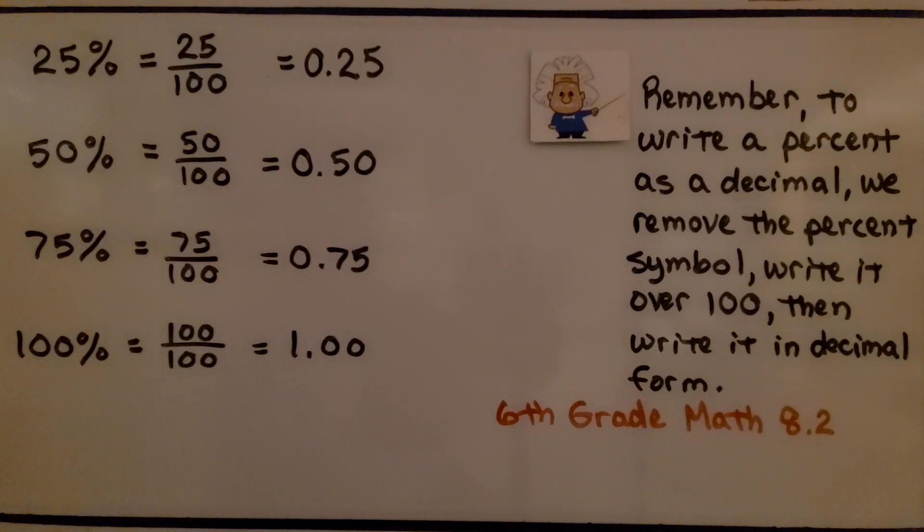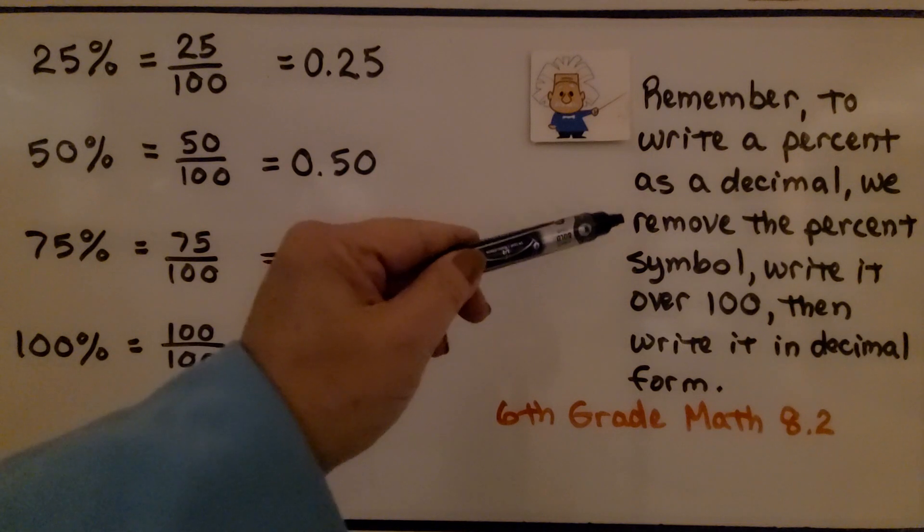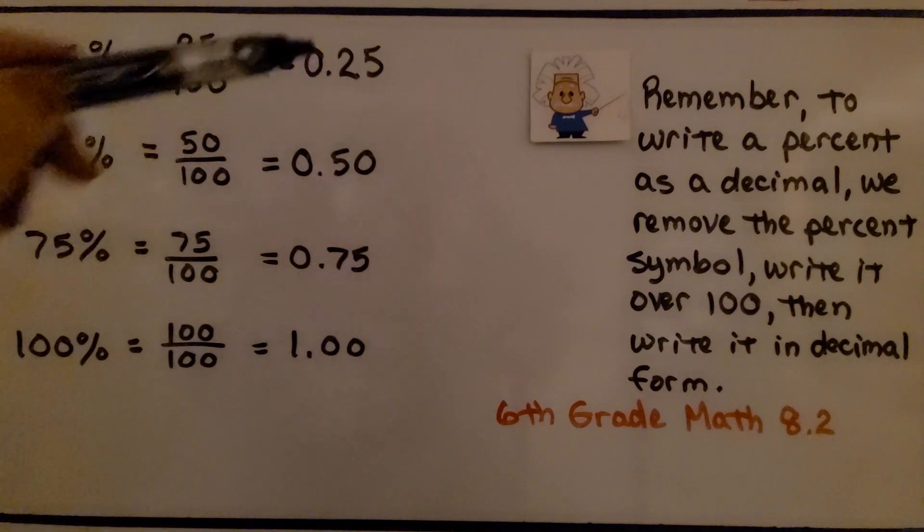I don't know if you remember from last year in sixth grade math, it was lesson 8.2. And that's going to be linked in this description if you're a little rusty and you don't remember. But we write a percent as a decimal by removing the percent symbol and writing it over 100. Then we can write it in decimal form.